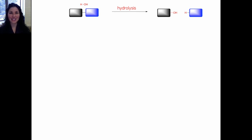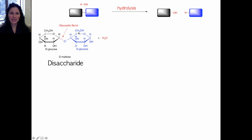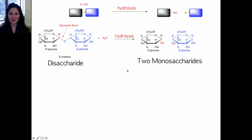Let's look at the hydrolysis of a disaccharide. When you hydrolyze a disaccharide, you cut the glycosidic bond — the same bond formed during condensation. When we add water and cut this bond, the OH group of the water will go to the anomeric carbon and the hydrogen of the water will go to the oxygen. The OH group from water is now attached to the anomeric carbon, and this oxygen is now attached to a hydrogen from water. The connection between the two units is severed, going from a disaccharide to two monosaccharides.